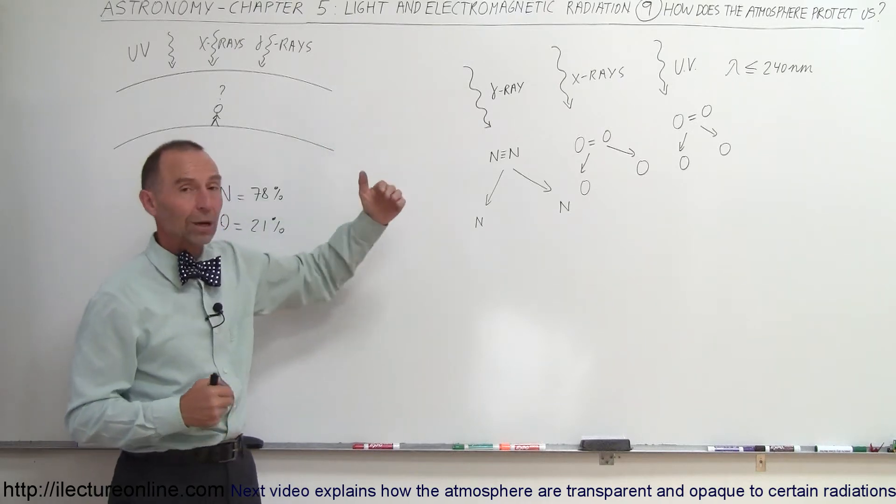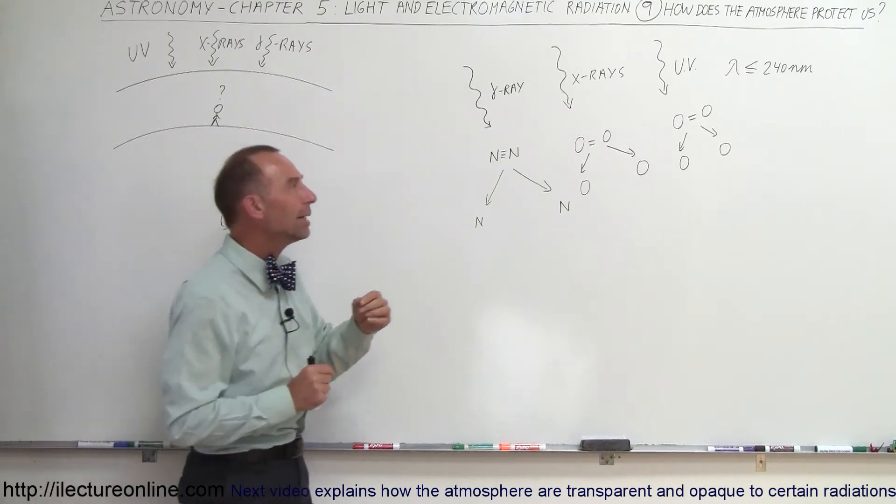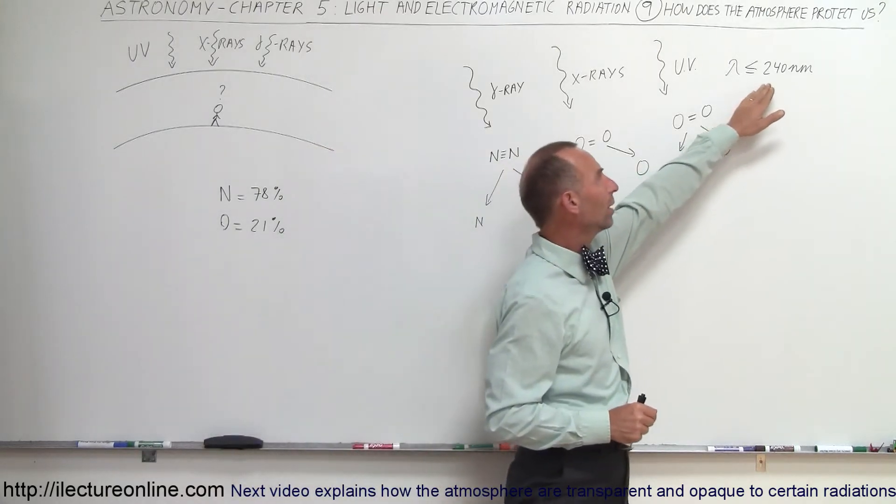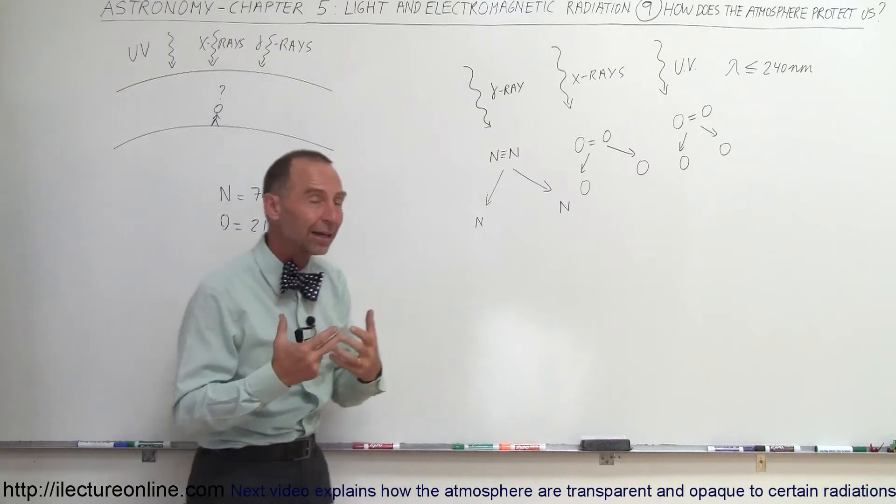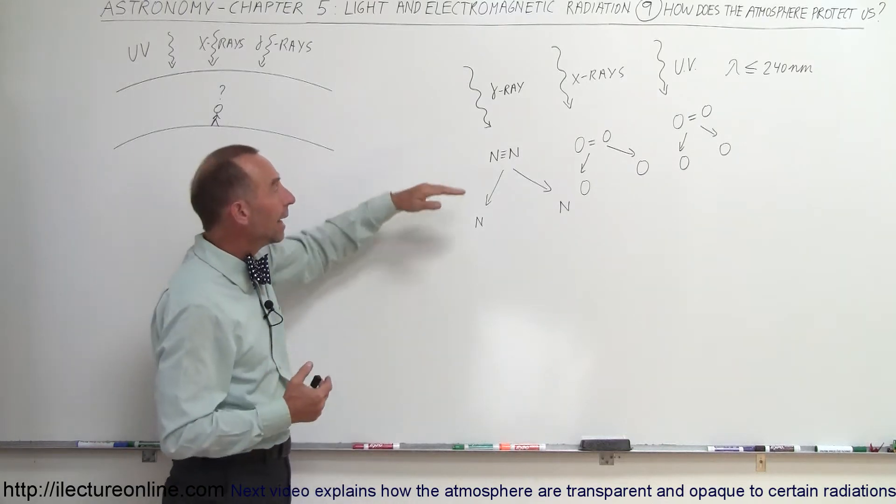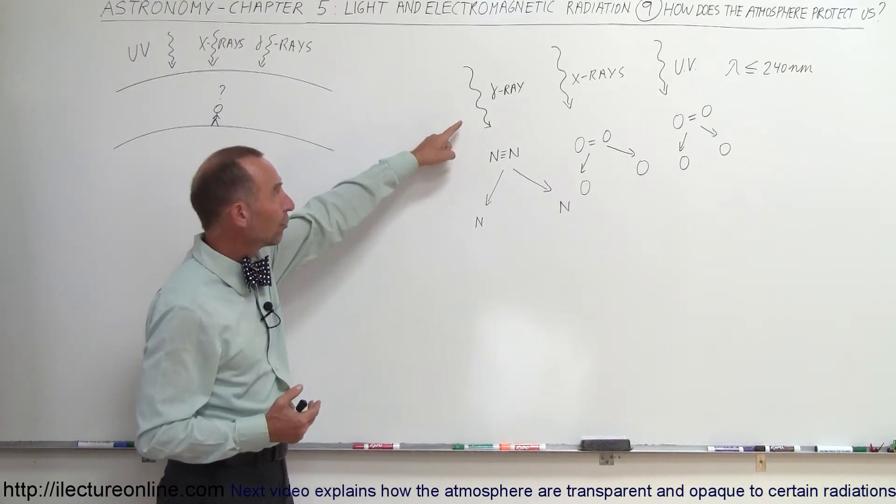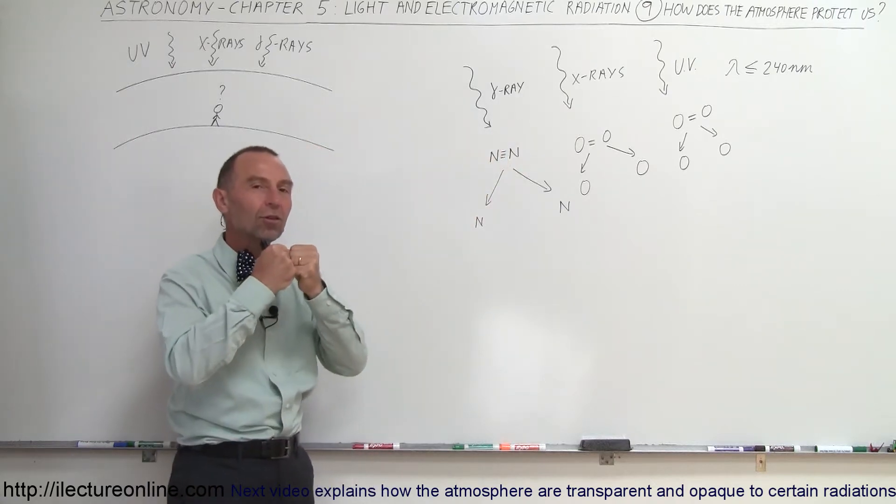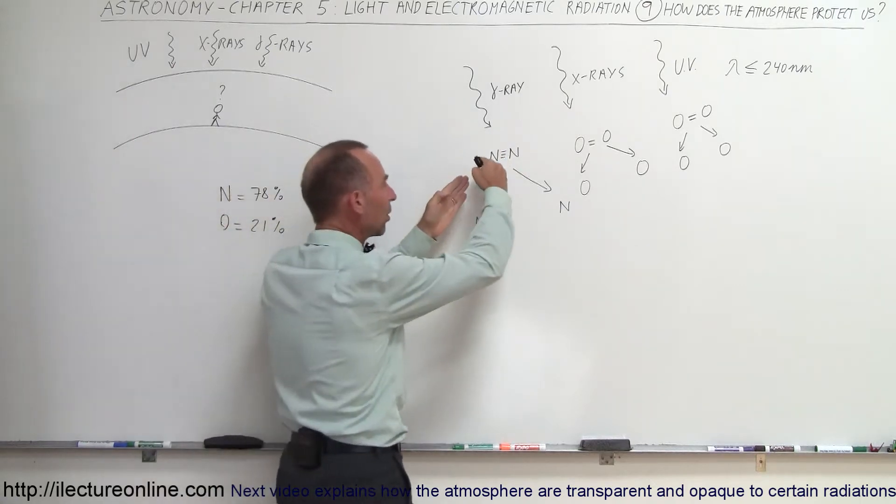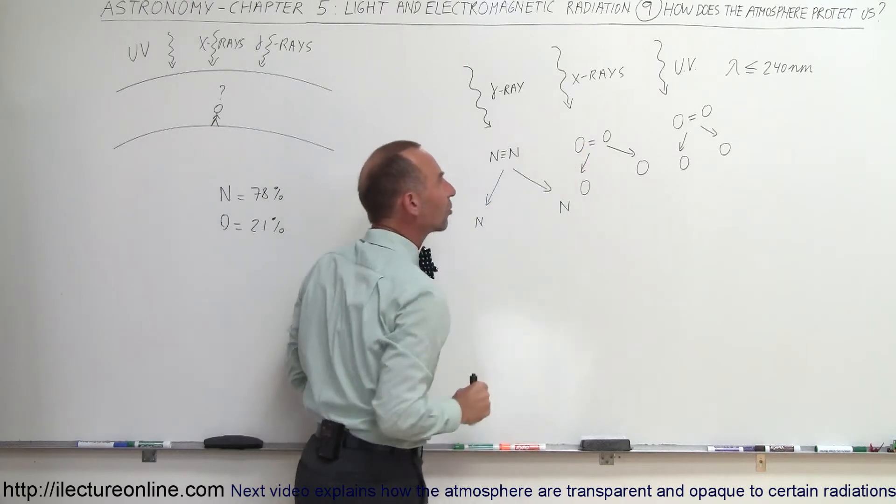But a gamma ray or an x-ray or a high-energy UV radiation, such as one that has wavelengths less than 240 nanometers, they have very high energy. They can come in, and especially for the x-rays and gamma rays, they can break the nitrogen bonds apart so that the nitrogen atoms are now separated. Same with the oxygen.